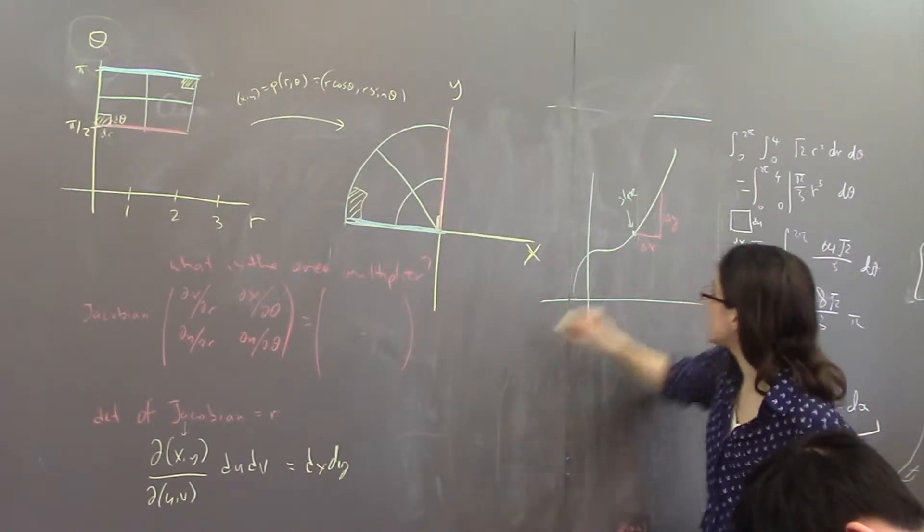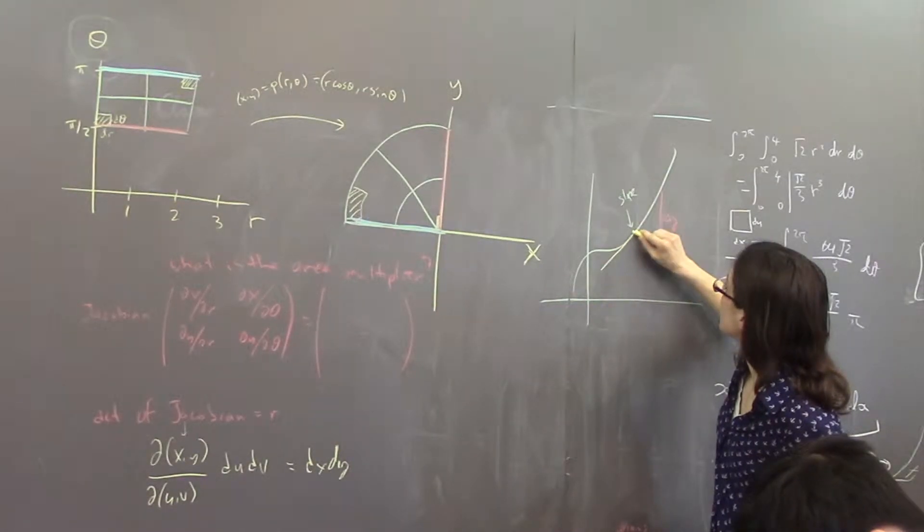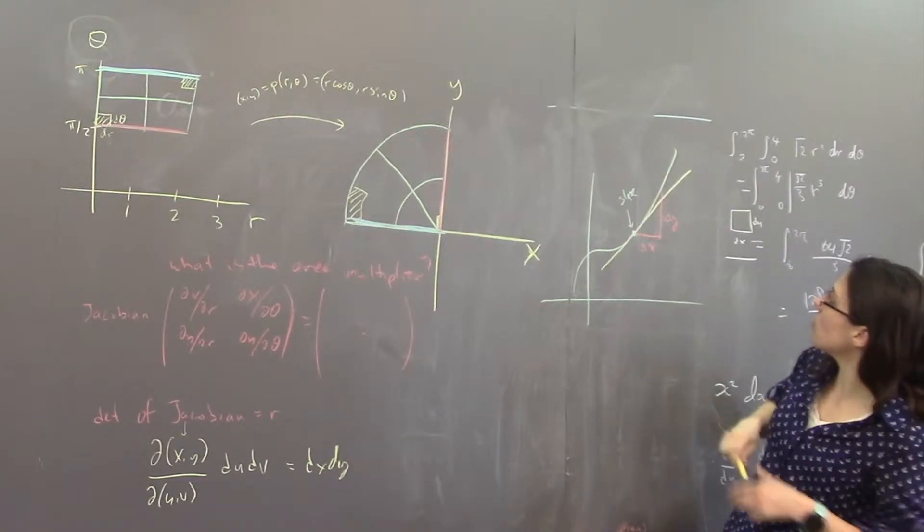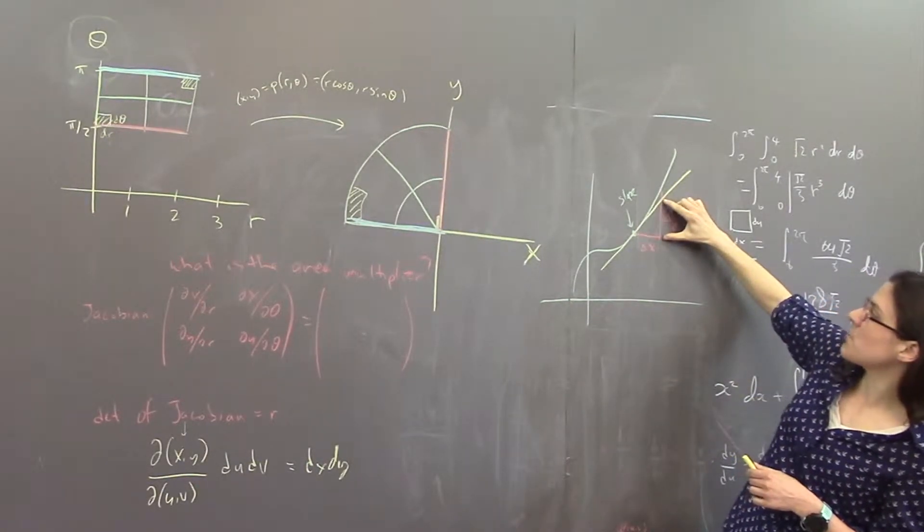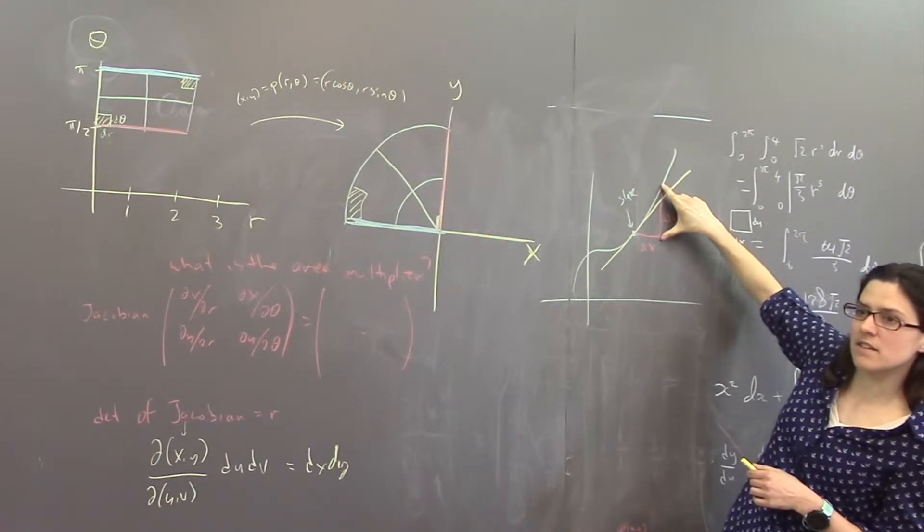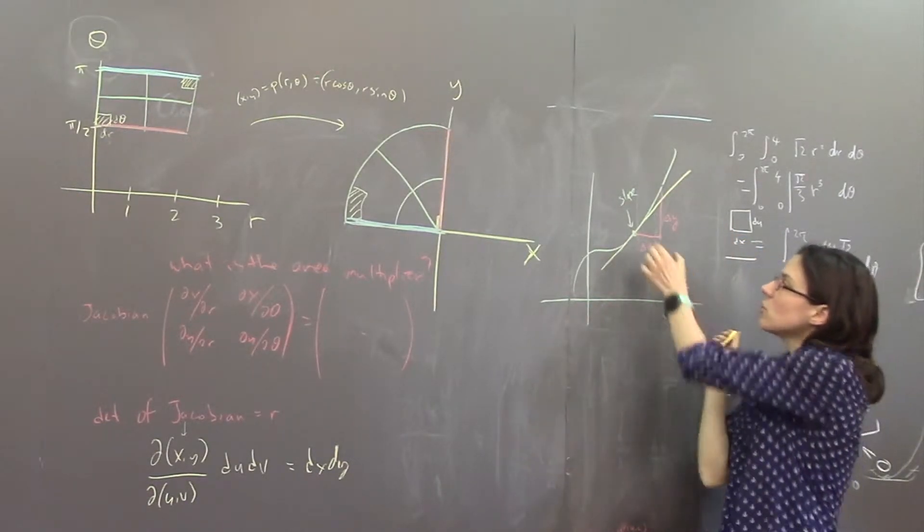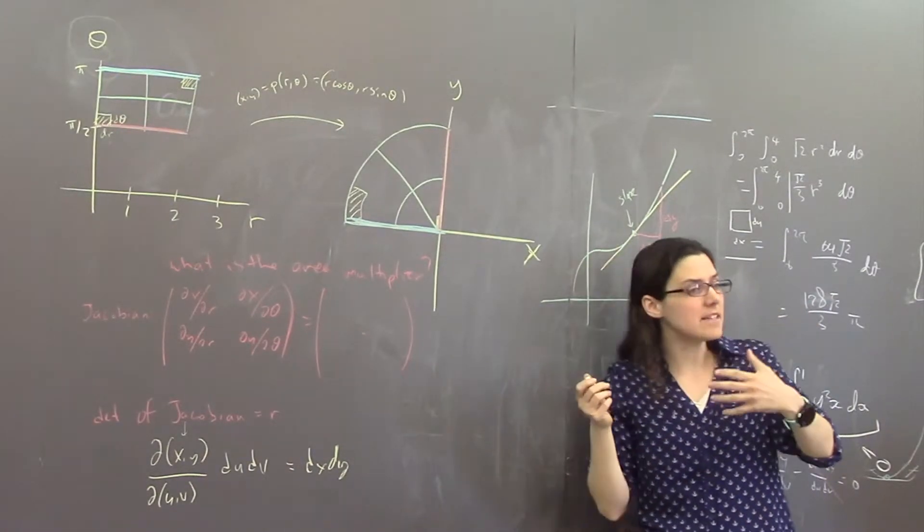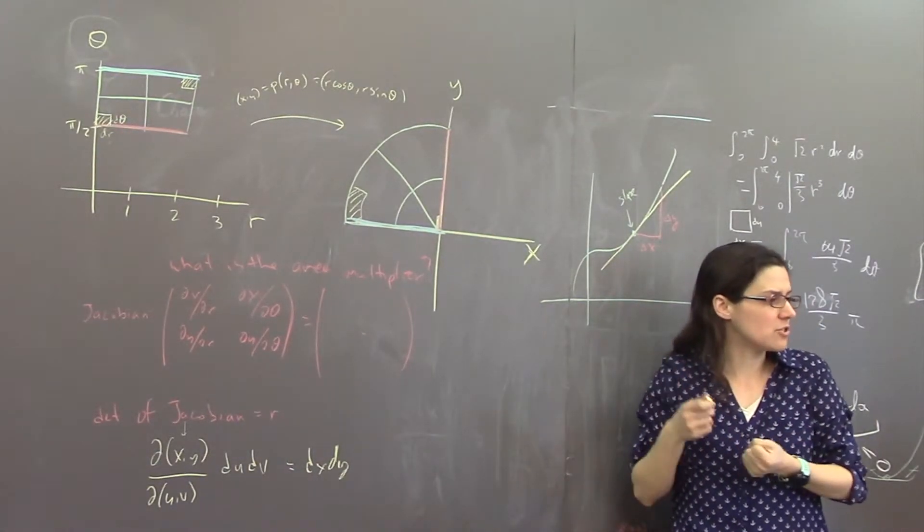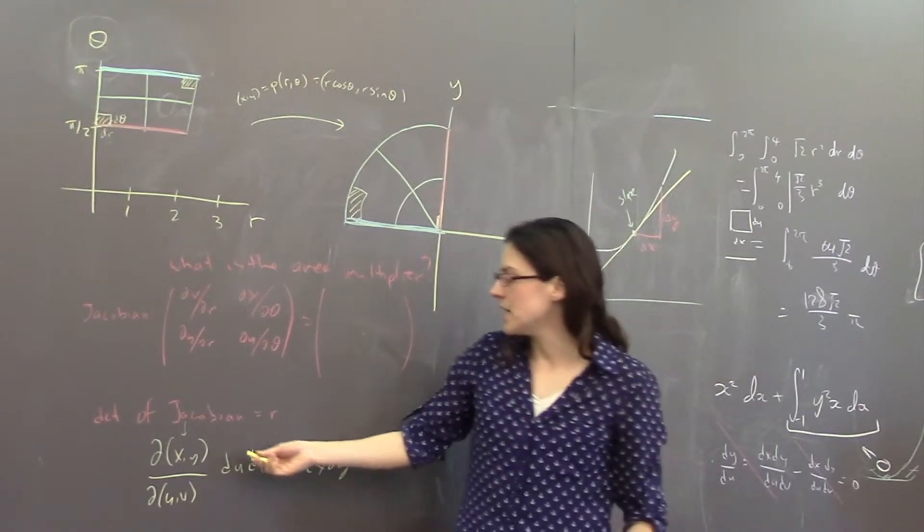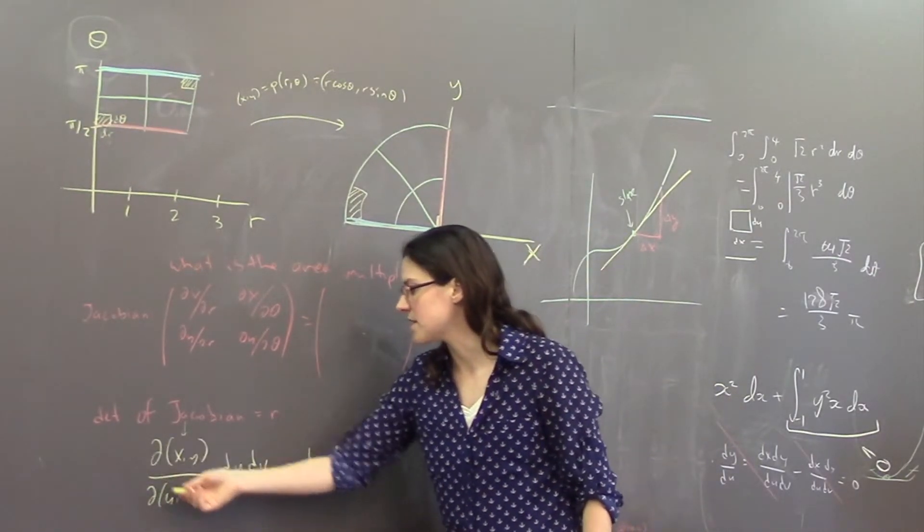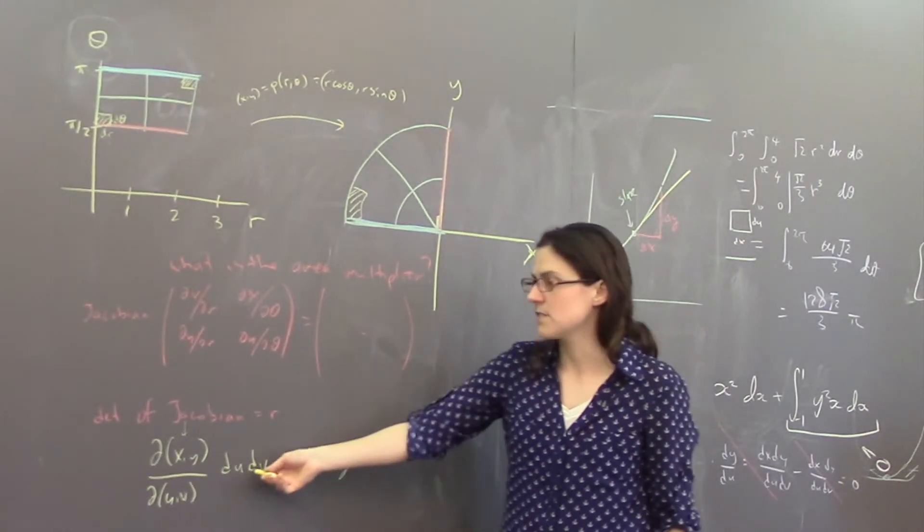Maybe the tangent line looks like this. So if I multiply change in x times the slope, I'll tell you that this is what you get, whereas truly it's supposed to be this. But the smaller your change in x is, the more accurate it will be. So in the limit, the slope really is the ratio of change in y to change in x. And over here, in the limit as the rectangle gets really small, the area expansion factor really is the ratio of dx dy to du dv.